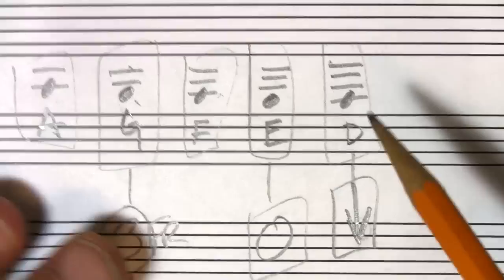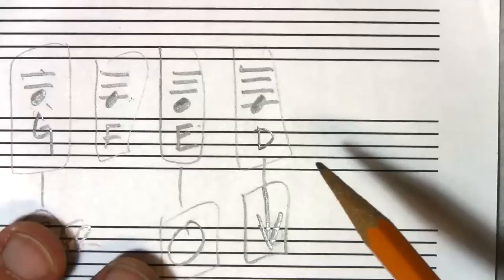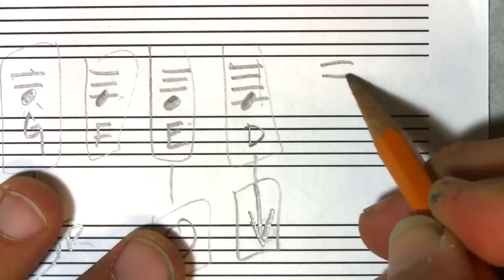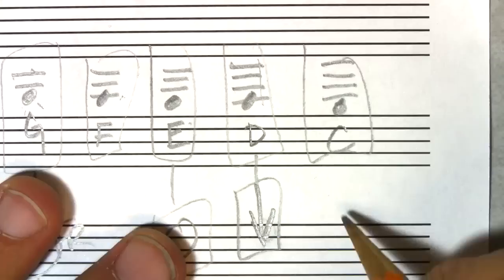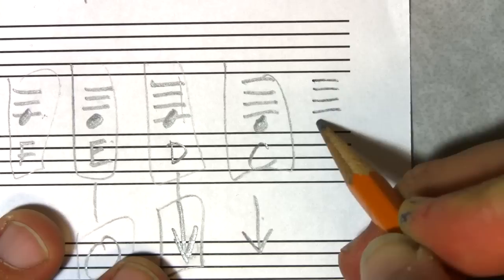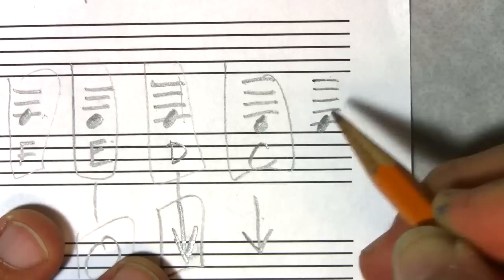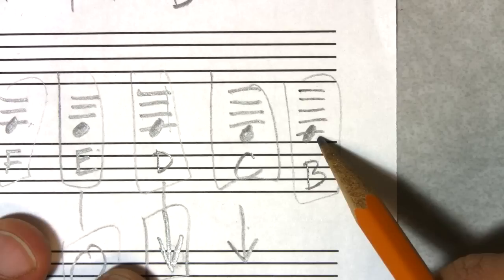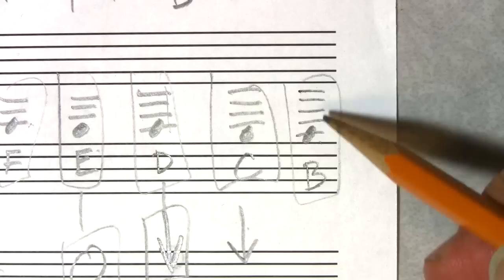Two ledger lines is the note A. A space below that ledger line is G — that's the third fret on the E string. Three lines is F. Three ledger lines and a space is the open E string. For drop tuning guys: four ledger lines is drop D, four ledger lines and a space is drop C. Five ledger lines is B — that's the lowest note on the seventh string guitar.